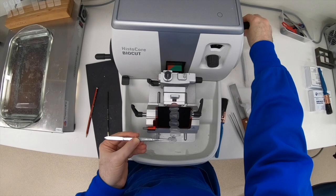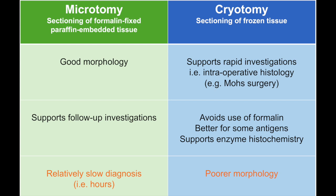Sectioning of formalin-fixed and paraffin-embedded tissue is widely recognized as the standard for most diagnostic applications. Sections cut from paraffin have good morphology and you also have the ability, if necessary, to go back and cut further sections for any follow-up investigations.